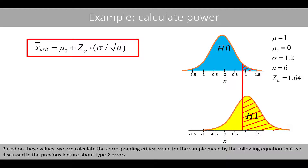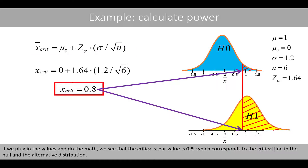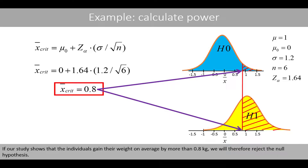Based on these values, we can calculate the corresponding critical value for the sample mean by the following equation that we discussed in the previous lecture about type 2 errors. If we plug in the values and do the math, we see that the critical x-bar value is 0.8, which corresponds to the critical line in the null and alternative distribution. If our study shows that the individuals gain weight on average by more than 0.8 kilos, we will therefore reject the null hypothesis.